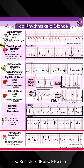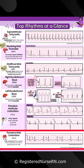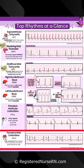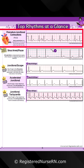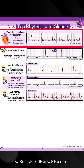Premature atrial contractions, or PACs, are early contractions that originate from a focal point in the atria rather than the SA node. Premature junctional contractions, or PJCs, are early contractions that originate from a focal point around the AV junction rather than the SA node.